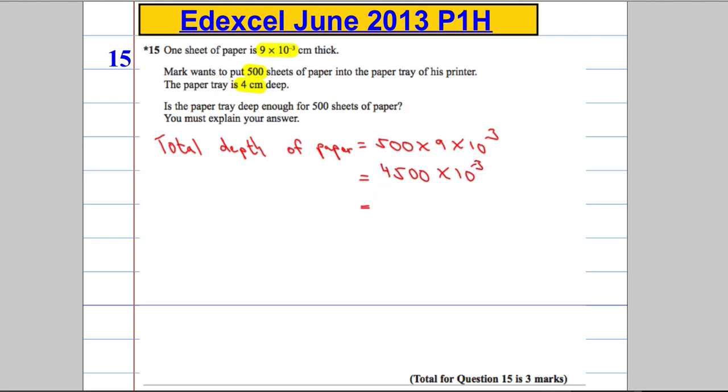And multiplying by 10 to the negative 3 just means make your number smaller by a factor of 10 three times. So I'm going to divide it by 10 three times. The decimal point is here. Divide it by three times. It's going to end up in the middle. That's going to be 4.5 centimeters.